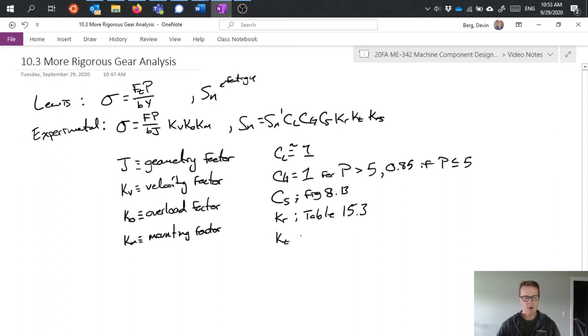We have a new temperature factor, and this is related to the temperature factor that we had for steel, but slightly different. It equals 1 for temperatures less than 160 degrees, and equals 620 over 460 plus T for temperatures greater than 160 degrees.